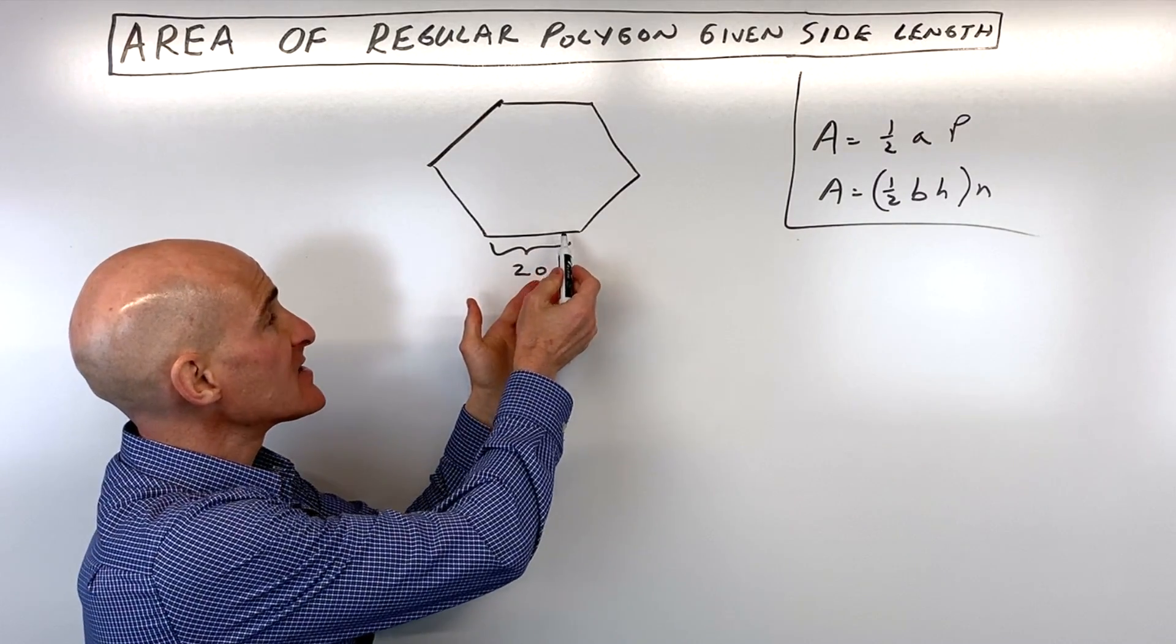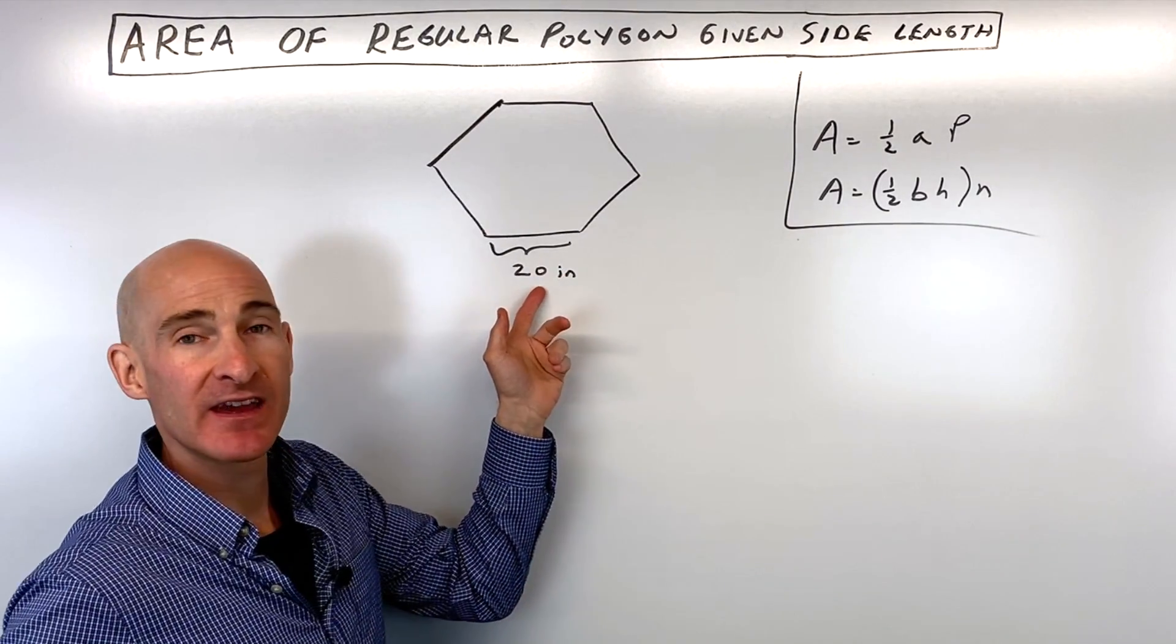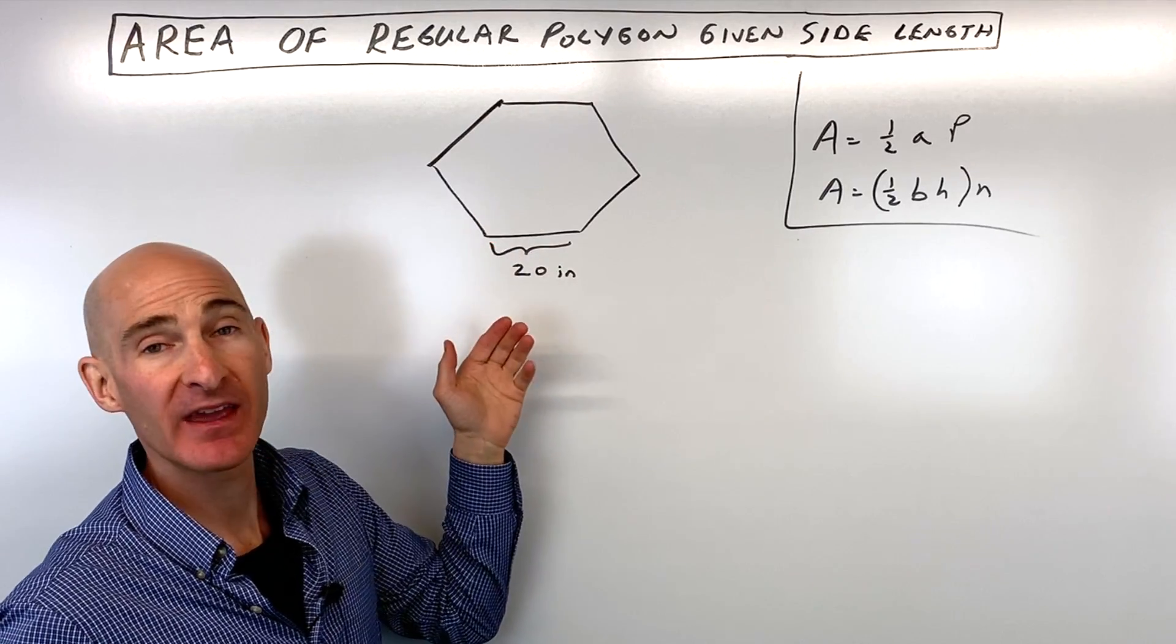We want to find the area of this hexagon, and they're only giving us the side length of 20 inches. How do we find the area?